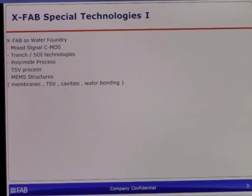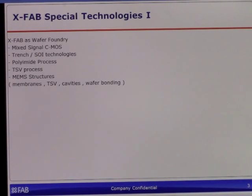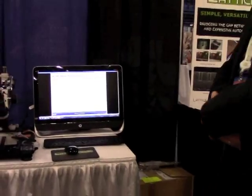Some words more about XFAB. XFAB is a wafer FAB with different FABs: two or three in Germany, one in Kuching, Malaysia, and one in Lubbock, Texas. Depending on location, we offer different technologies — mainly mixed signal. In Erfurt especially, we offer trench or SOI technologies, polyamide processes, TSV processes, and MEMS structures and special MEMS processes. We have membranes, TSVs, different kinds of cavities, and we use wafer bonding.